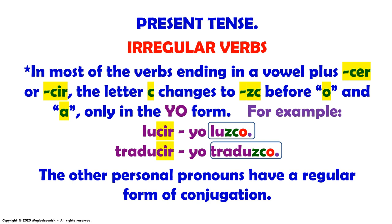Present tense, irregular verbs. In most of the verbs ending in a vowel plus CIR, or CIR, the letter C changes to ZC before O and A, only in the yo form. For example: lucir — yo luzco; traducir — yo traduzco.